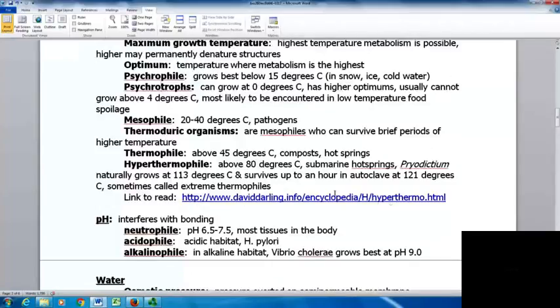Hyperthermophiles are above 80 degrees Celsius. These naturally grow at 113 degrees Celsius and can survive up to an hour in an autoclave at 121 degrees. Sometimes called extreme thermophiles. Most of these we don't have problems with as pathogens because 113 degrees Celsius is not an environment we survive in. This is a link with more information on these hyperthermophiles - they're interesting organisms.